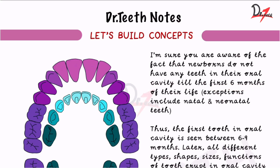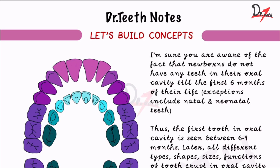Otherwise, for the majority of cases we have no teeth till six months. Thus the first tooth in the oral cavity is seen between six to nine months — this is not fixed, it can vary. Later, all different types, shapes, sizes, and functions of teeth erupt in the oral cavity according to a pattern.